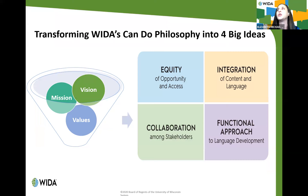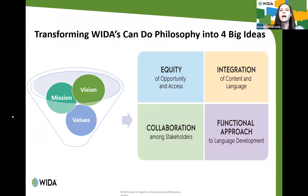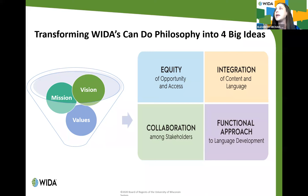One main goal of this updated edition was transforming the 'we can do' philosophy into four big ideas. These big ideas have always permeated the standards since the first edition in 2004, but this edition makes them explicit: equity of opportunity and access, integration of content and language, collaboration among stakeholders, and a functional approach to language development. These are now explicit statements rather than underlying subtext, reflecting WIDA's theories and values.